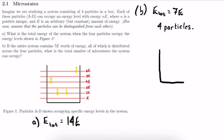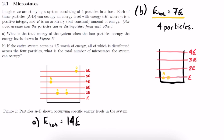Let's draw a diagram with our box and energy levels e, 2e, 3e, and 4e. Starting systematically: let's put particles a, b, and c in the lowest energy level. That's 3e, so particle d must be in the 4e energy level to reach a total of 7e. The total energy is e plus e plus e plus 4e — that's 7e — and we've found one possible microstate of our system.